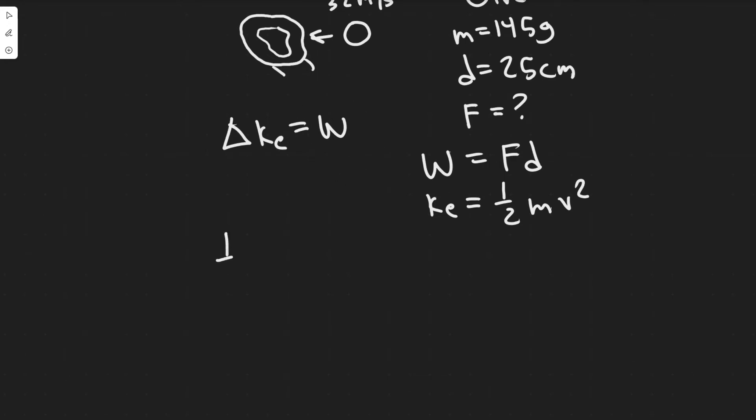So you can say one half mv final squared minus one half mv initial squared. This is equal to the change in the kinetic energy, because the only variable that changes here is the velocity. So we just take the final velocity minus the initial, and that gives you the change. And so this equals the change in the kinetic energy or the work. So this equals force times distance.